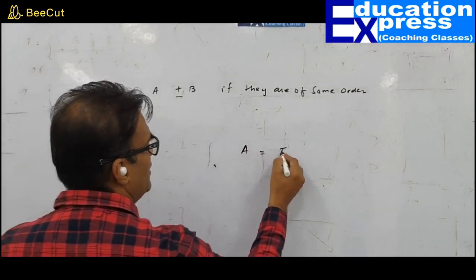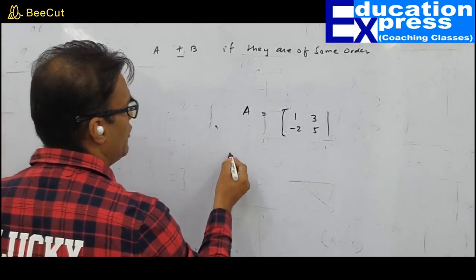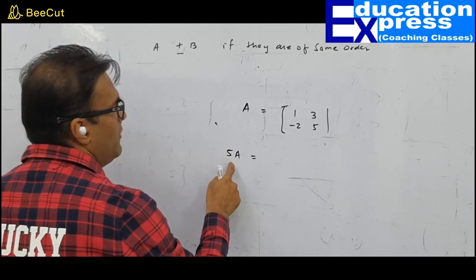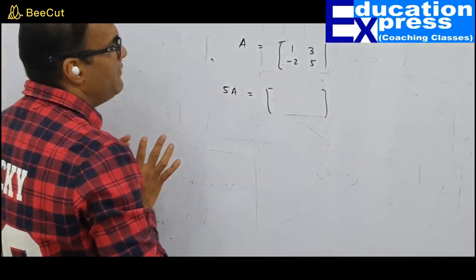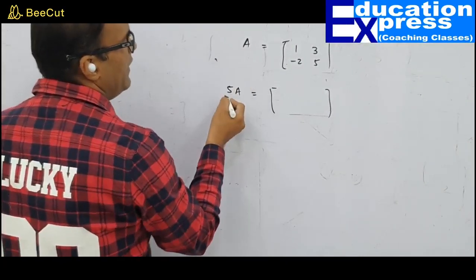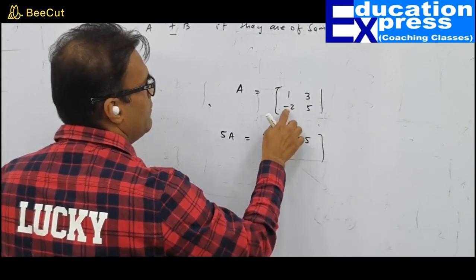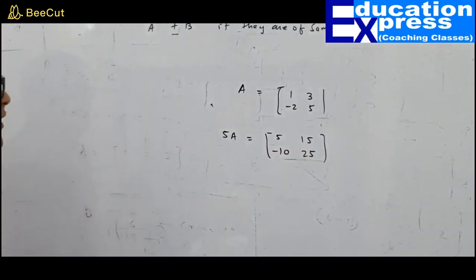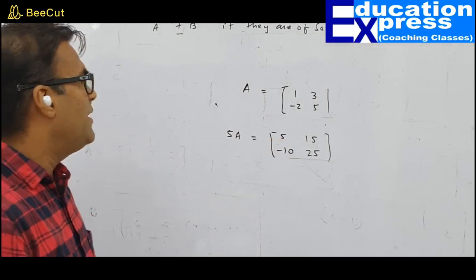Suppose A = [1, 3, −2, 5] and I want to find 5A. That means we are multiplying matrix A by 5. The effect on each element is that each element also gets multiplied by 5: 1×5=5, 3×5=15, −2×5=−10, 5×5=25. Each element of the matrix gets multiplied by the scalar.